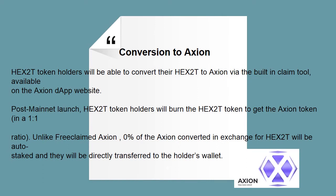Conversion to Axion: HEX 2T token holders will be able to convert their HEX 2T to Axion via the built-in claim tool available on the Axion DApp website. Post mainnet launch, HEX 2T token holders will burn the HEX 2T token to get the Axion token in a 1-to-1 ratio. Unlike free claimed Axion, 0% of the Axion converted in exchange for HEX 2T will be auto-staked; they will be directly transferred to the holder's wallet.